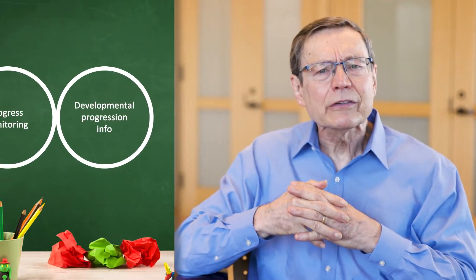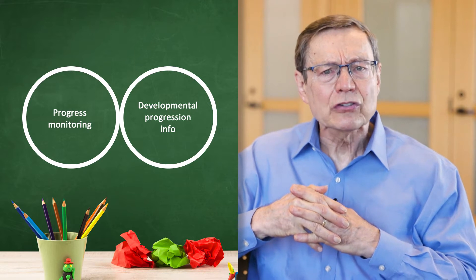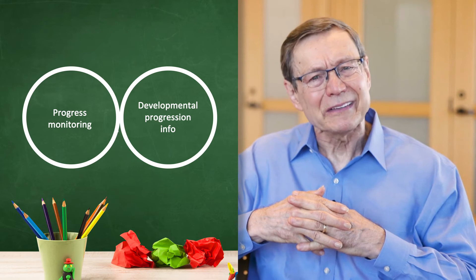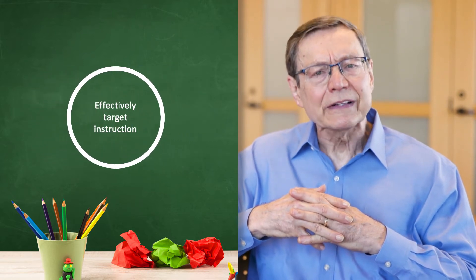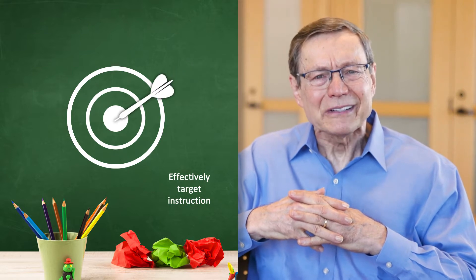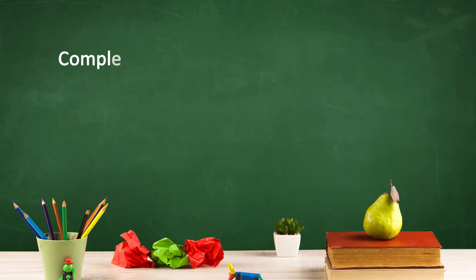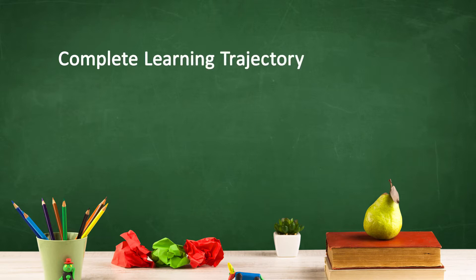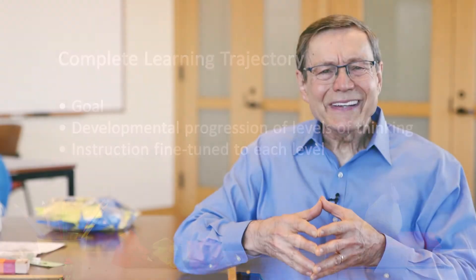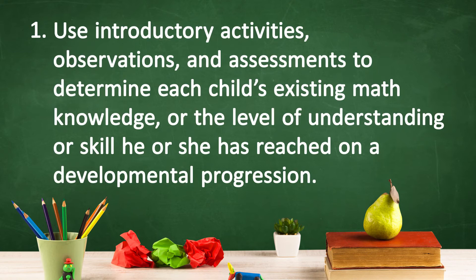When progress monitoring is combined with information on children's developmental progressions, as introduced in Recommendations 1 and 2 in the practice guide, teachers can more effectively target instruction to support children's math development. This combination creates a complete learning trajectory including a goal, a developmental progression of levels of thinking, and instruction fine-tuned to each level.